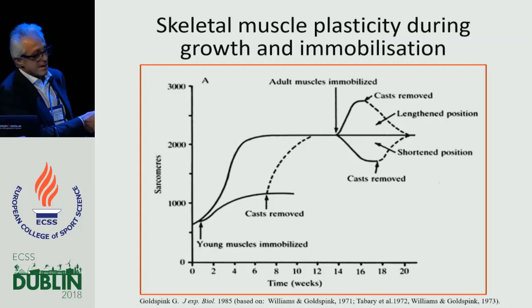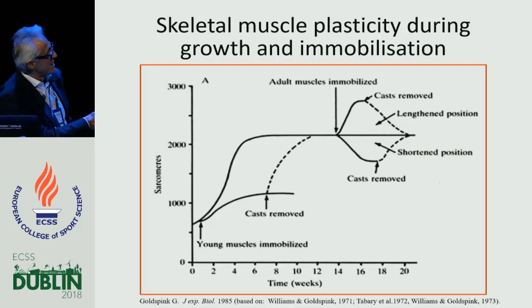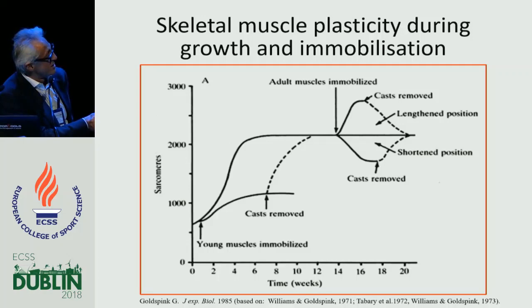Basically what they did, they counted sarcomere number as a function of development of the animal. As you can see, obviously as the animal grows, sarcomeres are quickly added to make up for the elongation of bones. Once the animal reaches an adult stage, sarcomere addition stops. If then the limb is immobilized in a stretched position, sarcomeres are added. When the cast is removed, sarcomeres are lost returning to the original functional length.